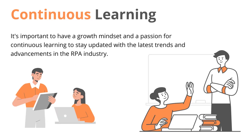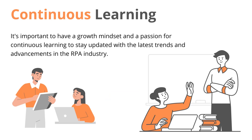The last skill is continuous learning. The field of RPA is constantly evolving with new tools, technologies, and best practices emerging regularly. It is important to have a growth mindset and stay up to date with the latest trends. We are currently heading towards intelligent automation and hyper-automation, with AI and ML integration being the next big thing. It's important in every field to keep upskilling yourself.